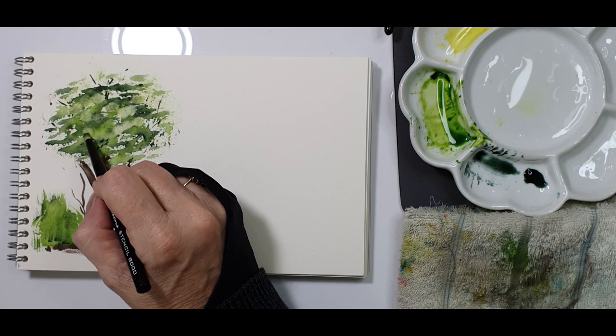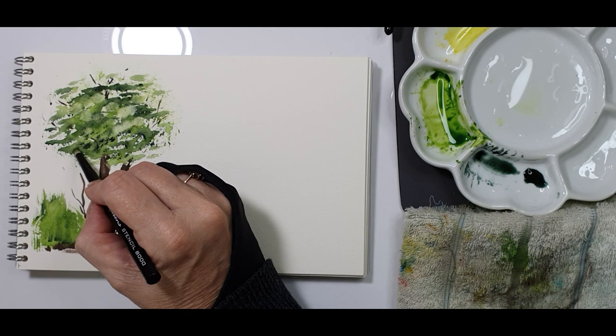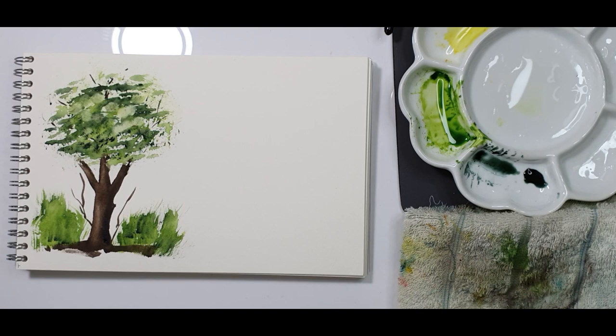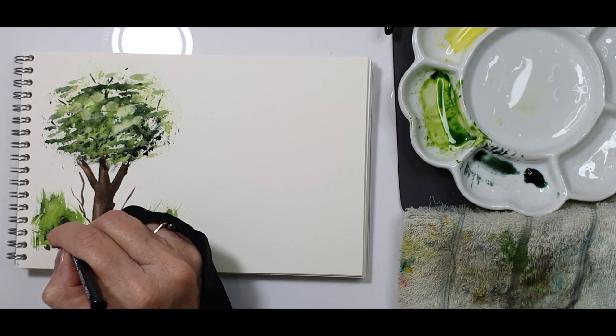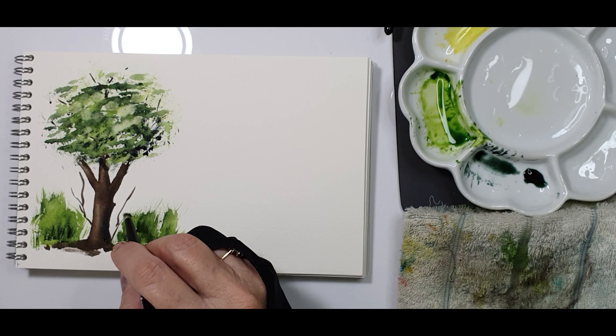Now I want to add some foliage. Dip the side of the stencil brush in the paint and just press lightly to add shadows, definition, and more texture to your trees. You can also do the same thing with the grasses, using the side and pulling it up.